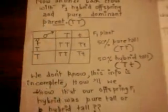We are crossing with the pure dominant parent and the F1 plant offspring. Now the results are in front of you. We got all the plants tall. In the previous test cross we saw that half of the offsprings were tall and half were dwarf, so it was very easy for us to deduce that our offspring was hybrid. But here we are getting 50% tall and 50% tall, but 50% are pure tall and 50% are hybrid tall. We don't know. This information is incomplete.